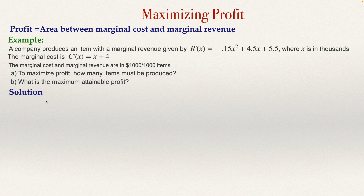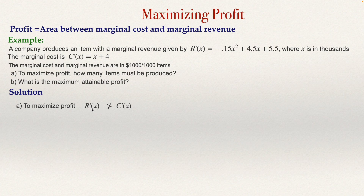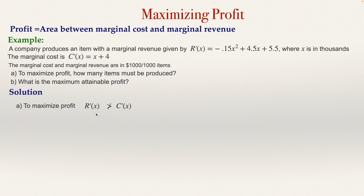To get the solution, notice first that to maximize profit, the company cannot be in a position when the marginal revenue is greater than the marginal cost. If they are producing an amount of units when the marginal revenue is greater than the marginal cost, then producing another unit would increase the profit. So in that position, the company is not obtaining the maximum profit — producing one more unit will increase it.